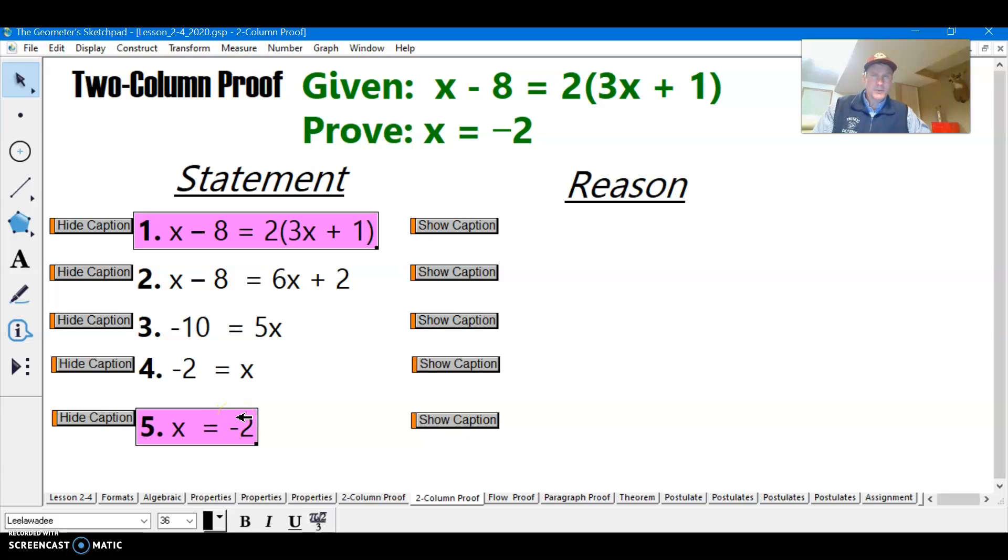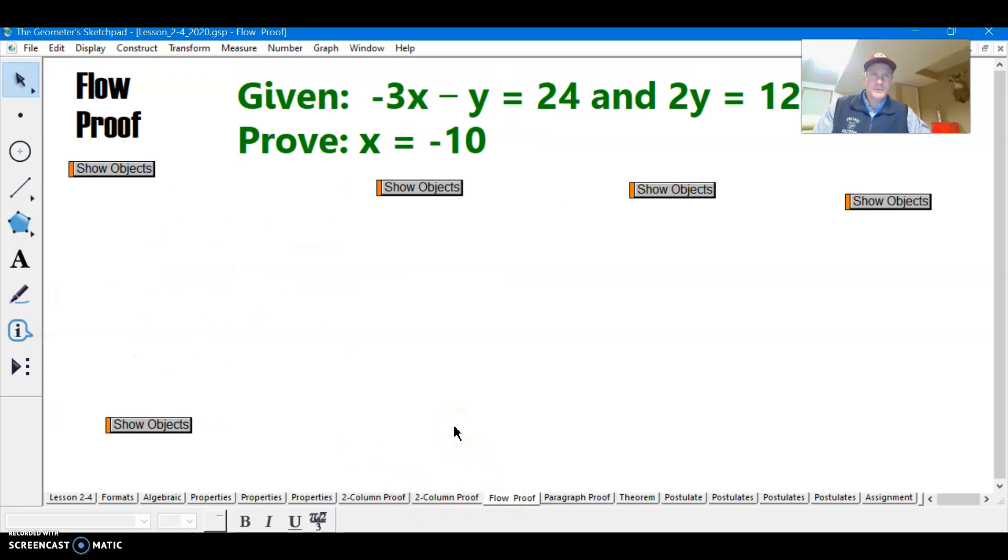That's why we proved it. Now, that was a very linear argument. One statement led to the next, that led to the next, that led to the next, that led to the next, down the line. Well, not every argument is quite so linear. That's a good time to use a flowchart proof.